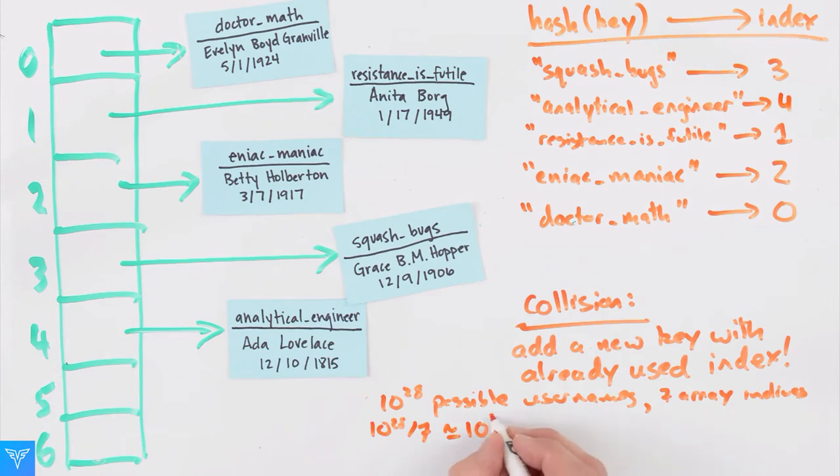We might be very lucky and have all six of our users just happen to be assigned to different indices, but we can't count on this. There are a couple of different ways of resolving this.